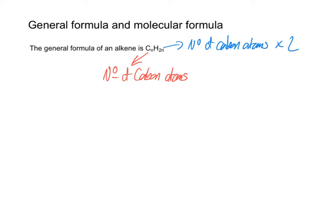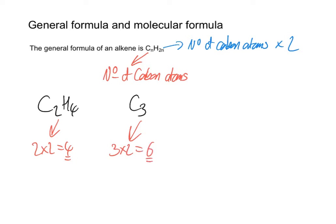Let's have a look at some examples. If I've got two carbon atoms, all I would do is two multiplied by two equals four. So this tells me that the formula of this alkene would be C2H4. If I had an alkene with three carbon atoms, or propene, all I would need to do is take three multiplied by two, which gives me six, so the formula would be C3H6.